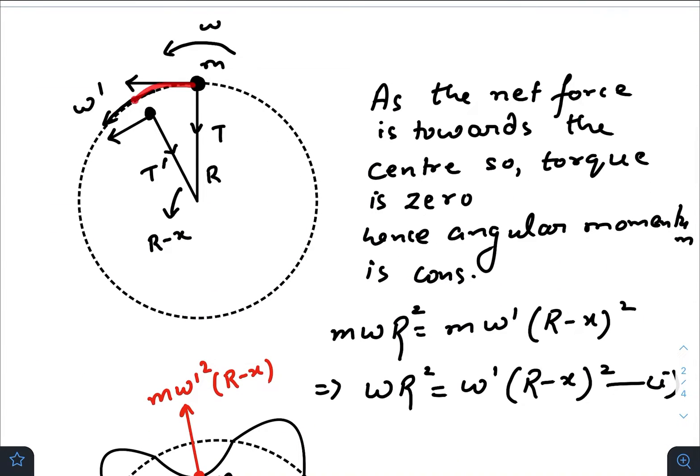Suppose initially the disk was moving at a constant radius R with a constant angular velocity omega. Now if that weight of mass capital M is pulled slightly downwards, suppose it is slightly below by a distance x from its mean position, the radius which was initially R becomes R minus x, resulting in change of the tension.